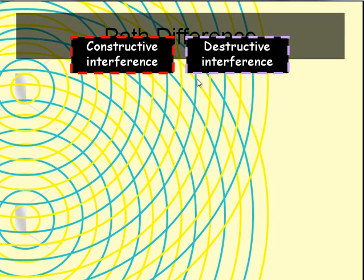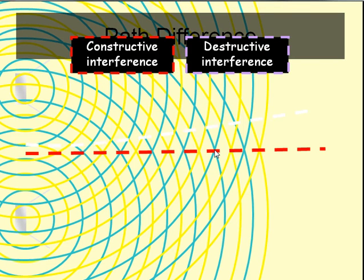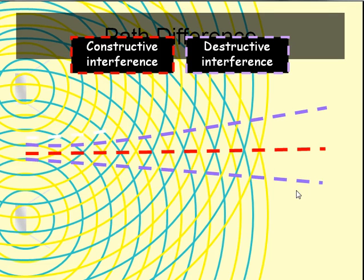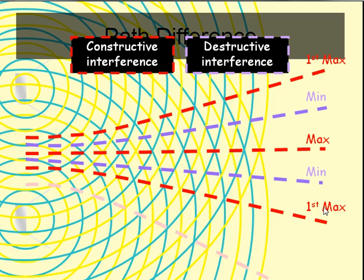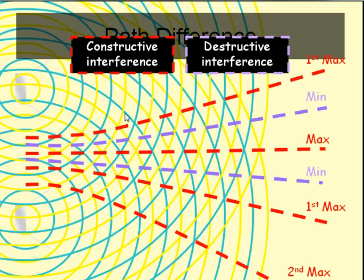You can color-code constructive and destructive interference — red for constructive, purple for destructive. You'll see there are multiple maxima and minima. There's your first and second maxima. So that's superposition and interference in a nutshell.